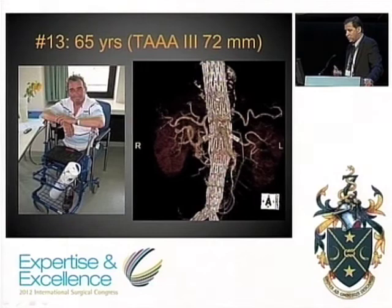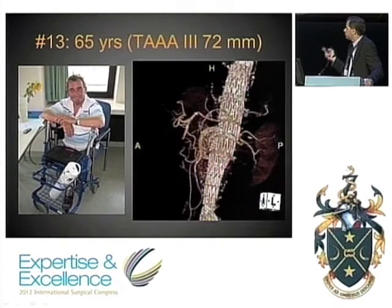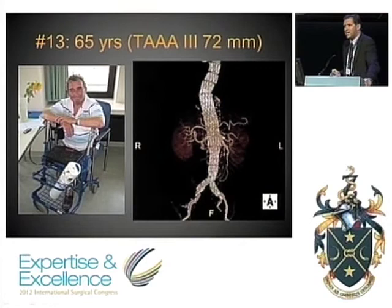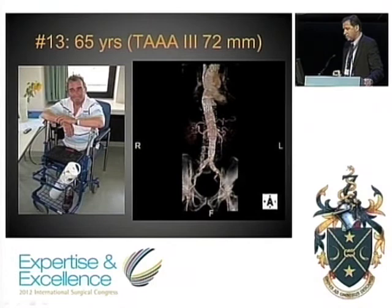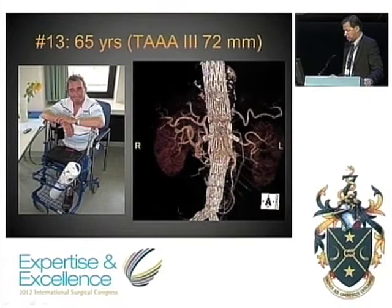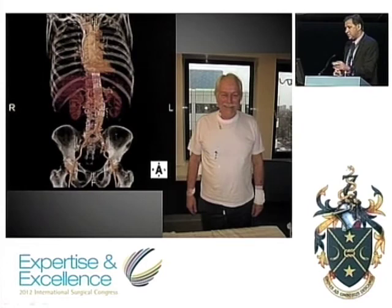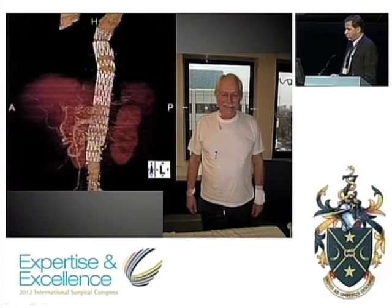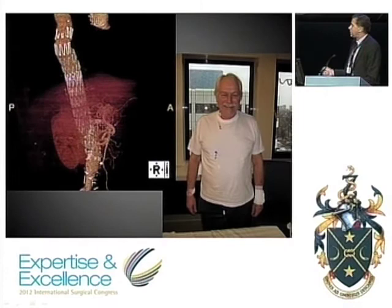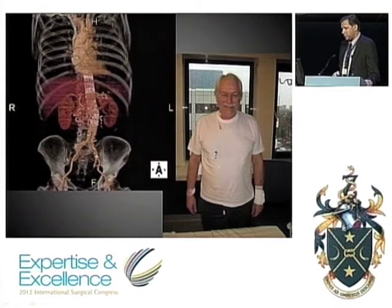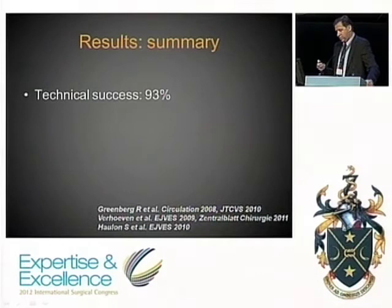Another case: a younger patient with a large thoracoabdominal aneurysm on home oxygen. We used this type of graft but encountered a problem — we lost the celiac artery, which was highly calcified and occluded during catheterization. The patient had three weeks of hospitalization with abdominal pain but fortunately recovered. A final case: a patient who had a ruptured aneurysm treated by open means with many complications. He had a type 3 thoracoabdominal extension and was treated with our branch graft system.